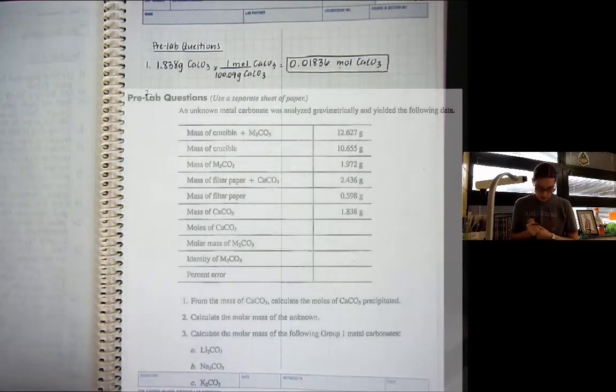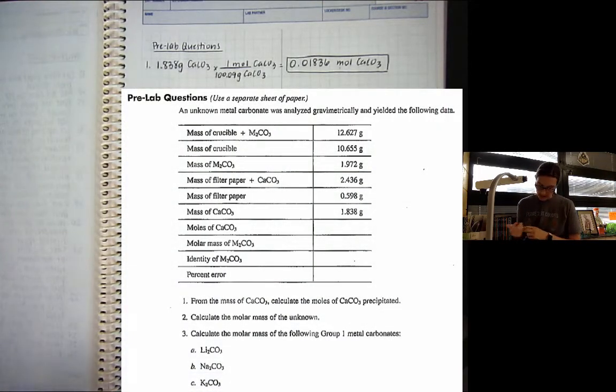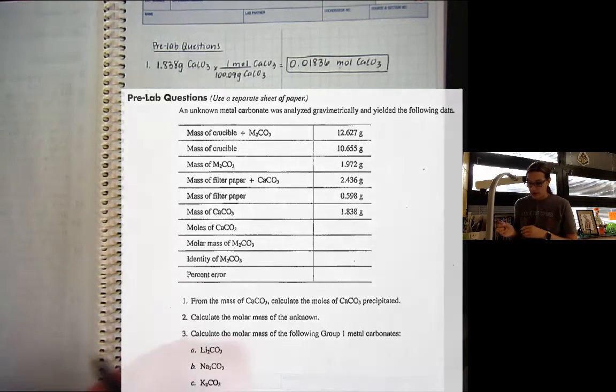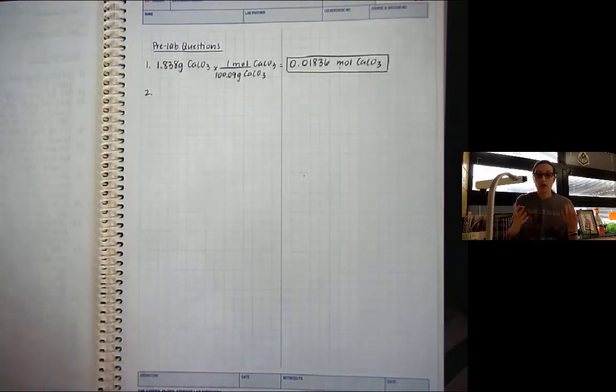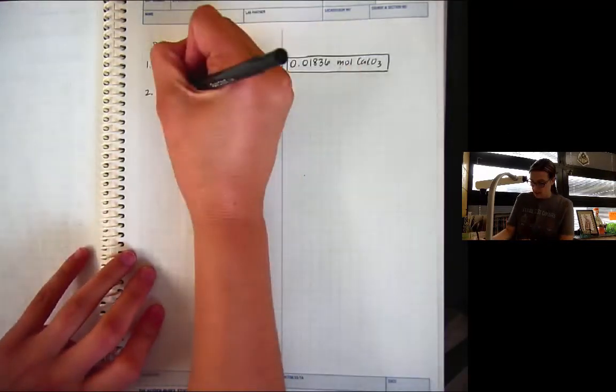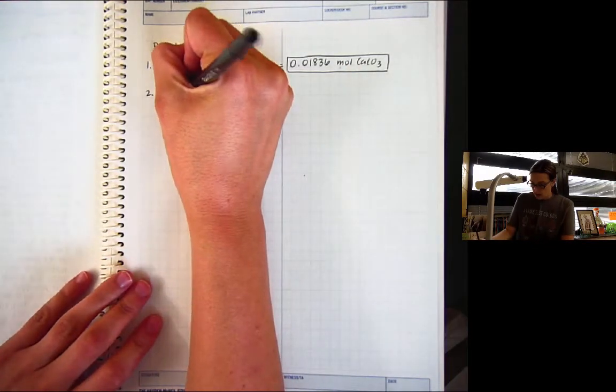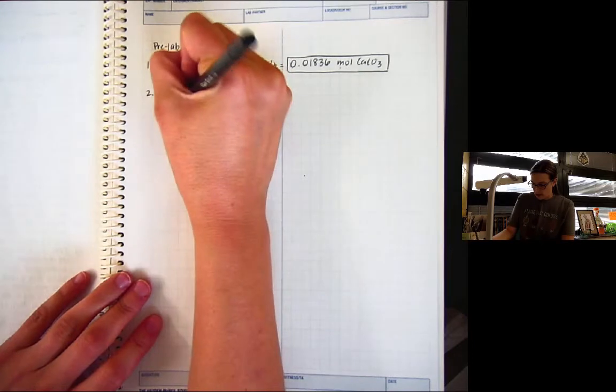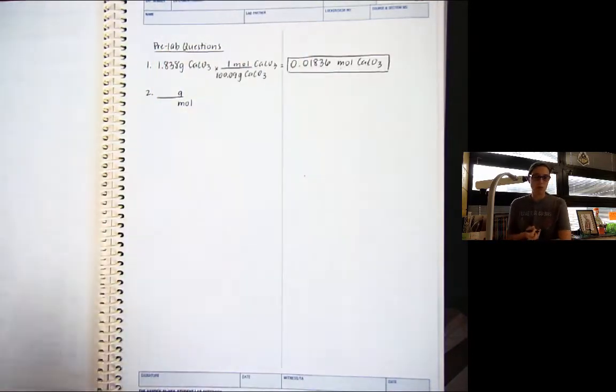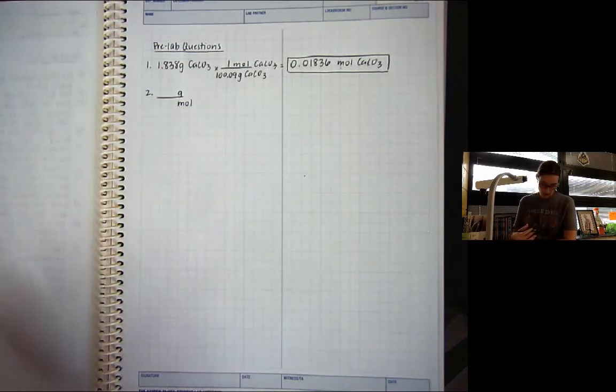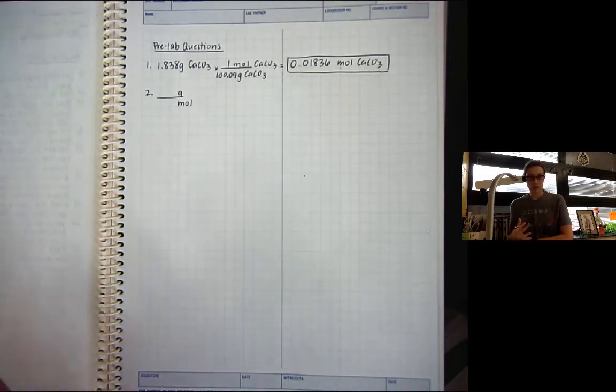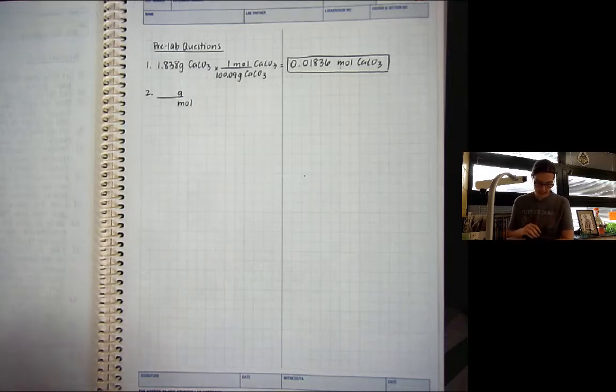So pre-lab question number two says, calculate the molar mass of the unknown. So for this, we need the molar mass of the unknown. I don't know what the chemical formula is, so I can't just use the periodic table to find the molar mass. Instead, I'm going to have to use data here. So I know that the units for molar mass are grams per mole. So if I know the grams of the unknown, and I know the moles of the unknown, I can figure out the molar mass.